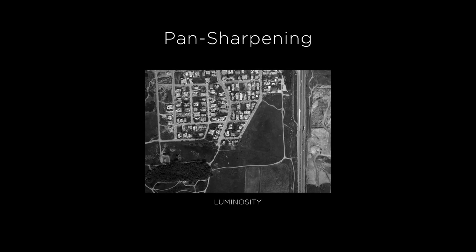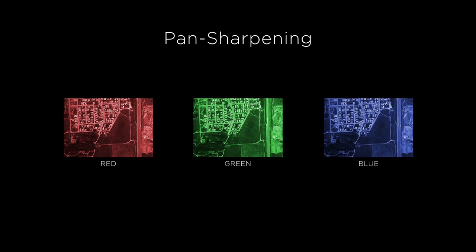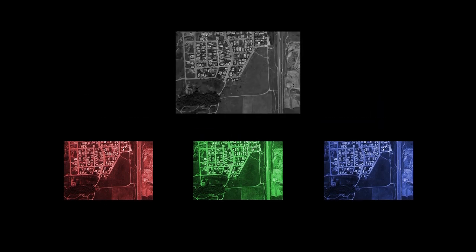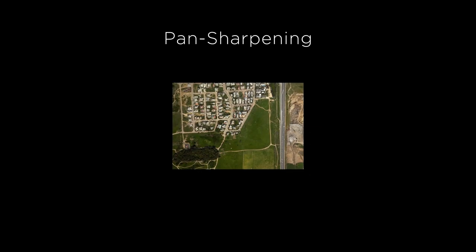Traditionally, pan-sharpening technology has been used to create the highest quality images in aerial photography. A large monochrome image sensor is used to capture the luminosity of the area, and then color information is captured separately with smaller secondary sensors for red, green, and blue independently. A color image is then created in post-processing, combining the monochrome data with the separate color data.